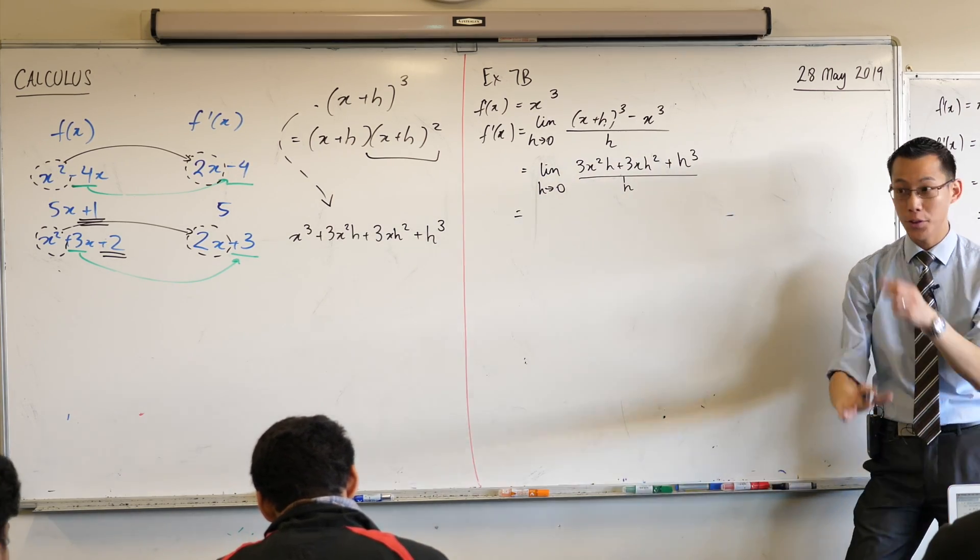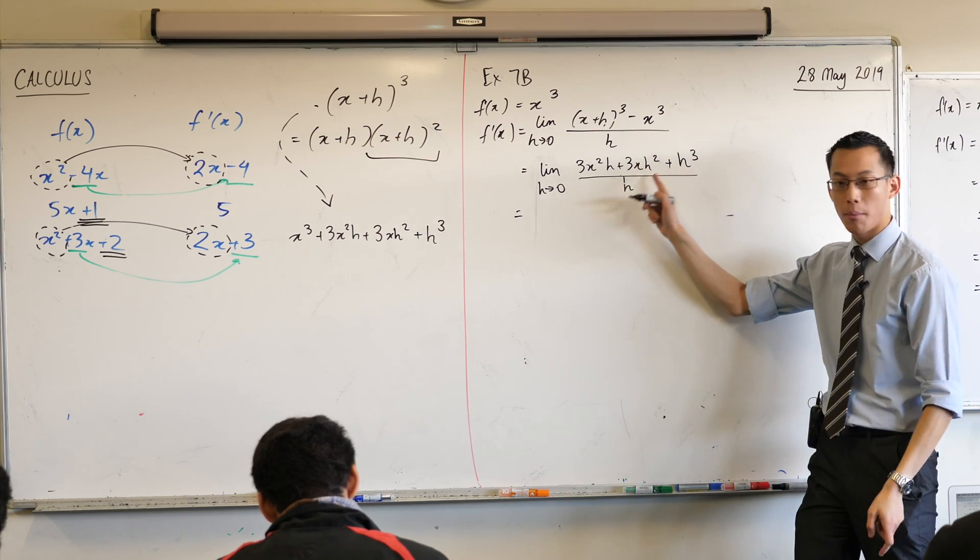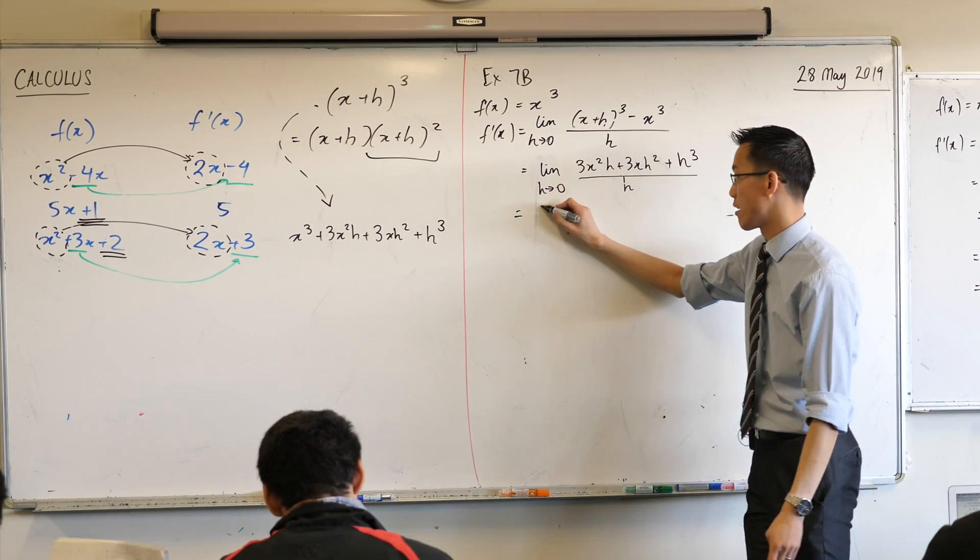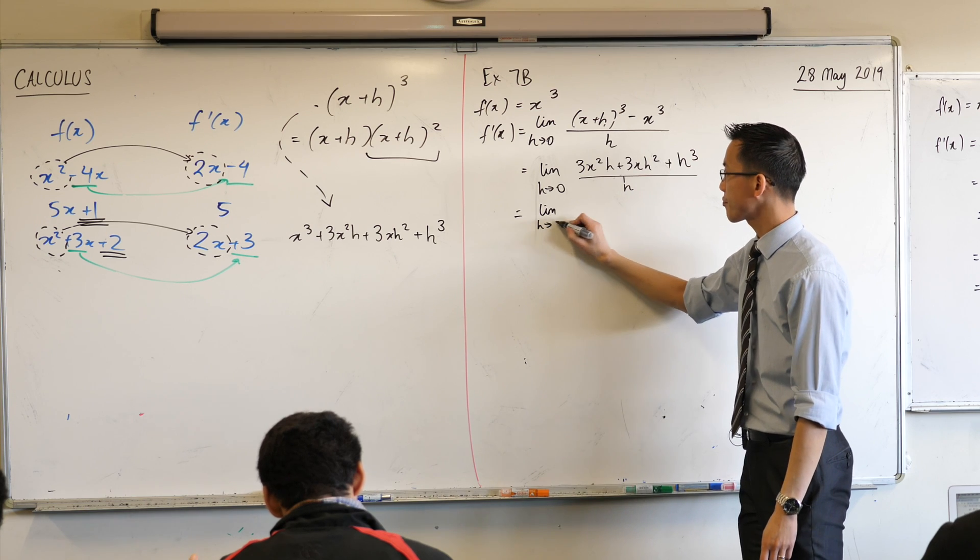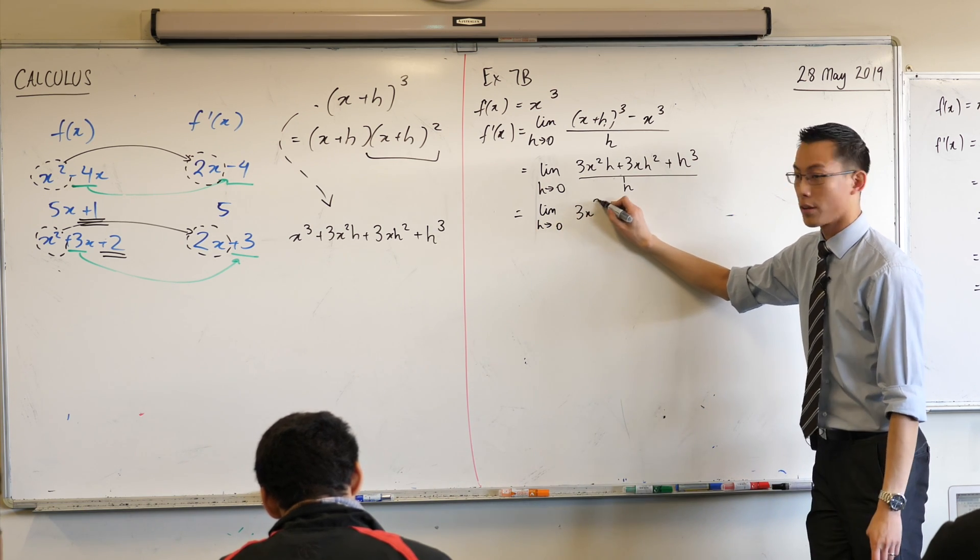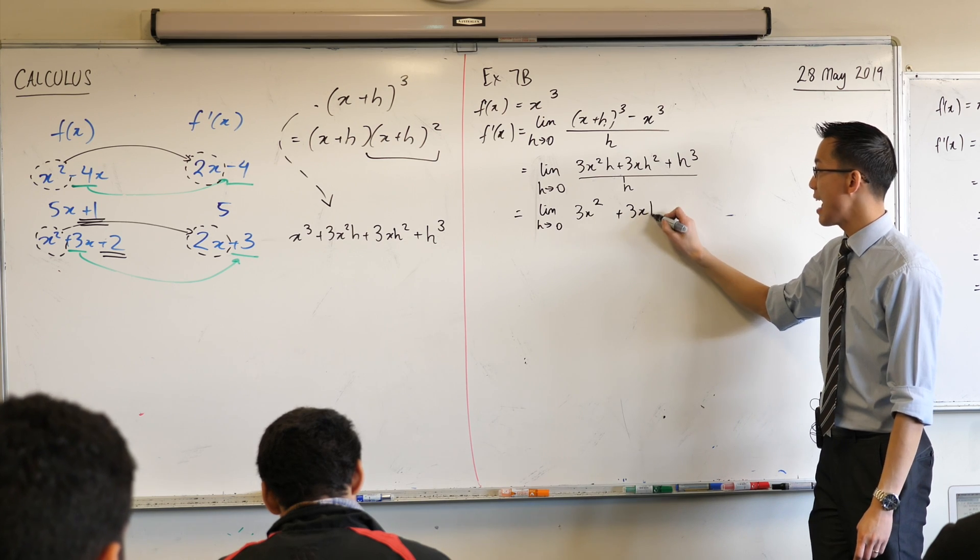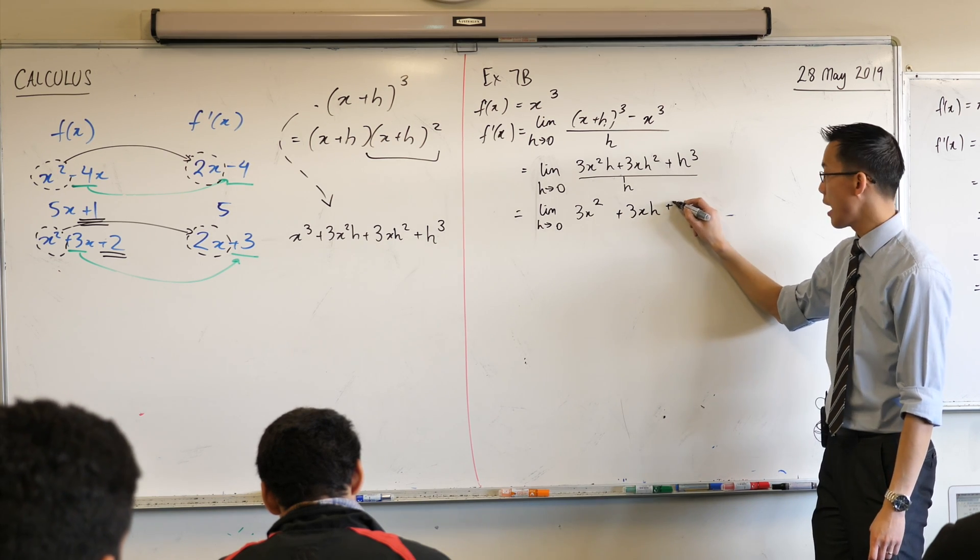At this point, hopefully if you got this right, you're like, oh, I have a common factor of h all the way through. So I can just divide my numerator through and this is what you get. You've got the 3x squared at the front. What comes next? 3x. 3xh plus? H squared. H squared. Very good.